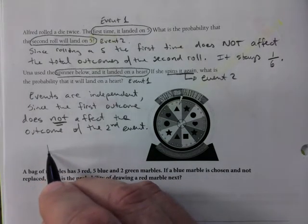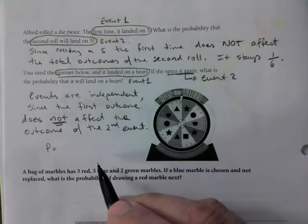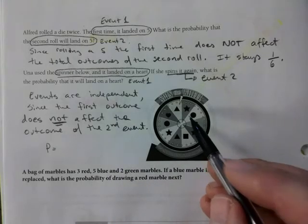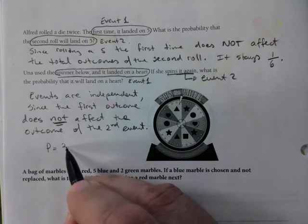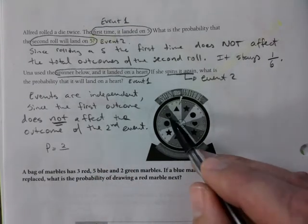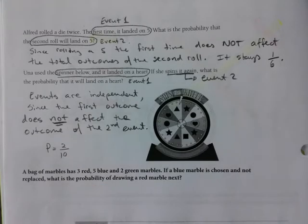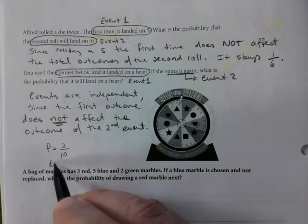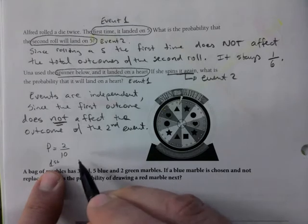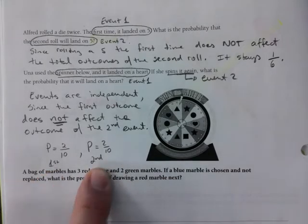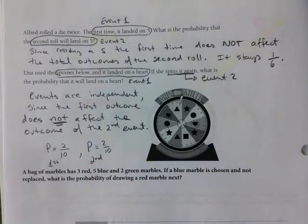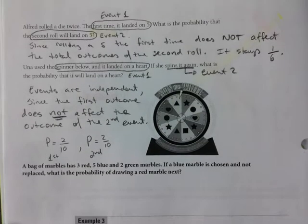So the probability would be hearts. How many hearts do we have? They use the same spinner — one, two. Two out of ten. This is the first. Heart on the first spin and the second, it's still two out of ten. Nothing changes from one to the other. Very important distinction.